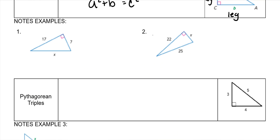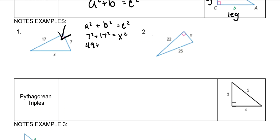So some examples. Your hypotenuse is x, so 7 and 17 are your a and your b — it doesn't matter which one you choose to make a or b. 7 squared plus 17 squared: 7 squared is 49, 17 squared is 289. When you add them together you get 338.